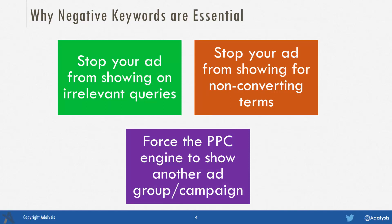Negative keywords are essential for three main purposes. One, stop your ad showing from completely irrelevant queries — these are negatives you can add right from the beginning of account creation. Secondly, you'll pick keywords that reflect your business and some of the search terms that match those keywords aren't going to convert, so a lot of our workflow is finding underperforming queries and blocking those. And third, it's to force the PPC engine to show one ad group over another when a search term can match multiple ad groups.